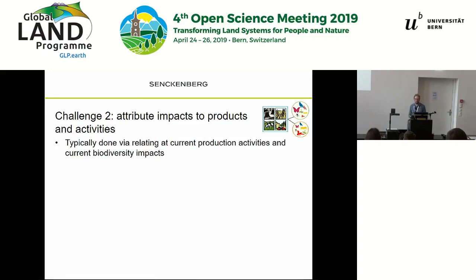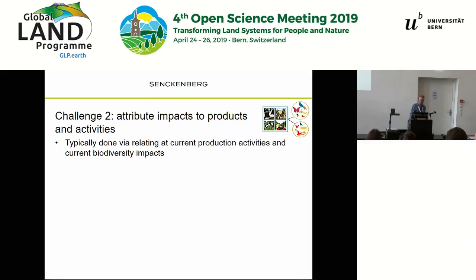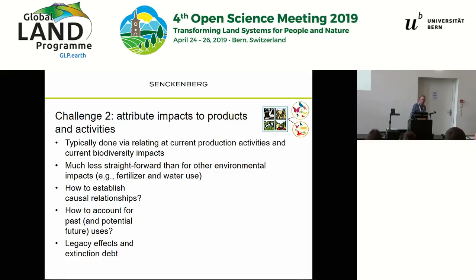The next step is how to attribute an impact to products and activities. It's typically done by looking at current production patterns and linking them to biodiversity impacts, either current or potential future. We have to recognize this is much less straightforward than for other environmental impacts, such as fertilizer use or water use, where you can directly attribute use to a crop — it's much more difficult to establish causal relationships for biodiversity change.